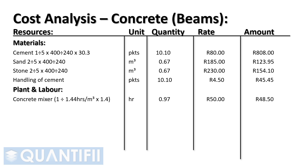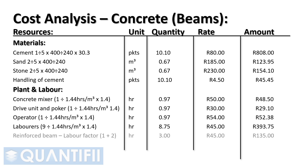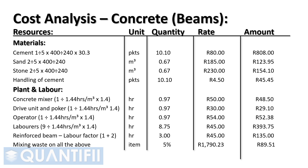Concrete mixer divided by 1.44 hours per cubic meter, multiplied by the height multiplier factor of 1.4, multiplied by 50 Rand. Drive unit and poker divided by 1.44 hours per cubic meter, multiplied by 1.4, multiplied by 30 Rand. An operator divided by 1.44 hours per cubic meter, multiplied by 1.4, multiplied by 54 Rand. 9 laborers divided by 1.44 hours per cubic meter, multiplied by 1.4, multiplied by 45 Rand. Add an additional hour for working around reinforcing, and add 2 hours for working on confined structures. Lastly, we add mixing waste on all the above items of 5%. The net cost for a cubic meter of concrete is therefore 1,879 Rand and 74 cents per cubic meter.